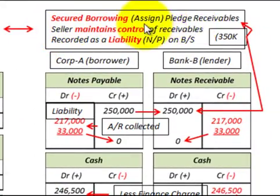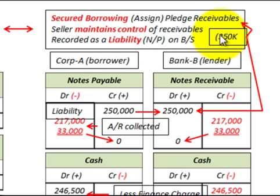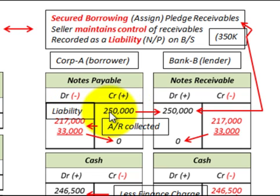Now let's look at secured borrowing, where we assign or pledge receivables. Here, the seller maintains control of the receivables, and it's recorded as a liability — notes payable — on the balance sheet. In this example, we're assigning $350,000 worth of receivables. For Corporation A, the borrower, they set up a liability on the balance sheet and credit their notes payable.